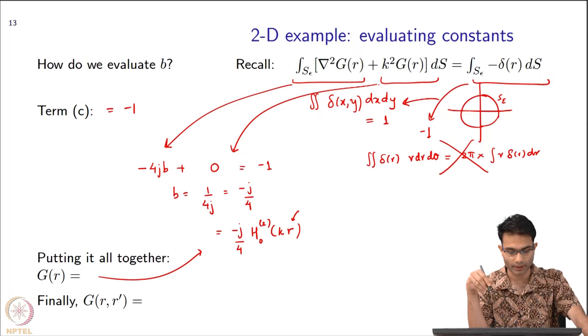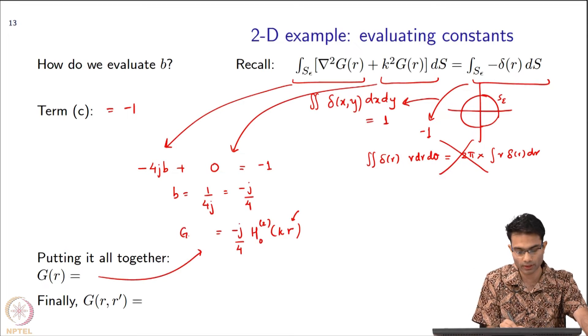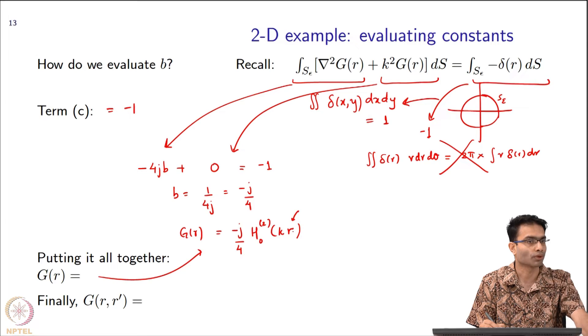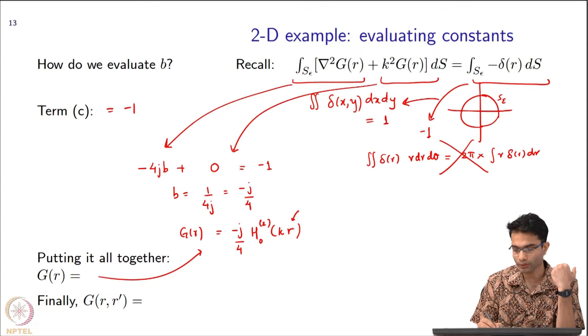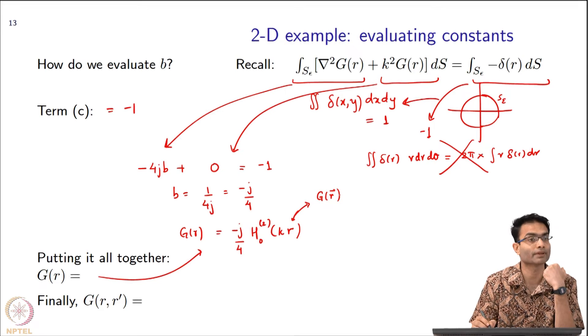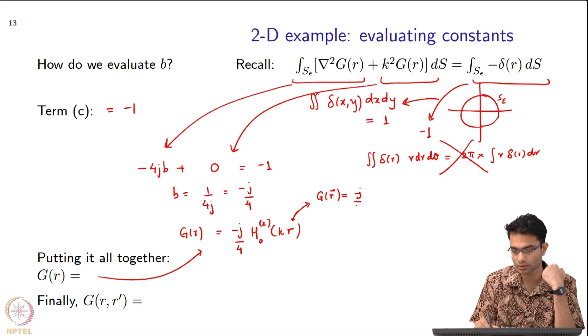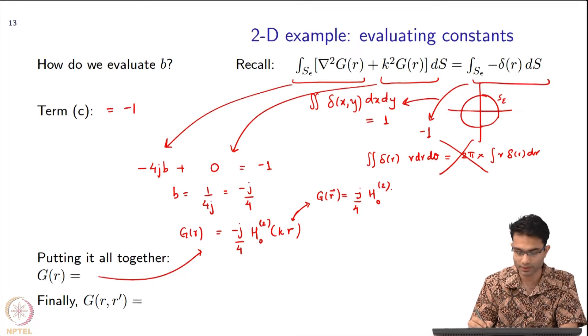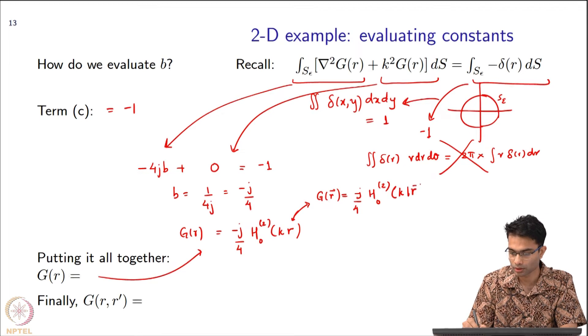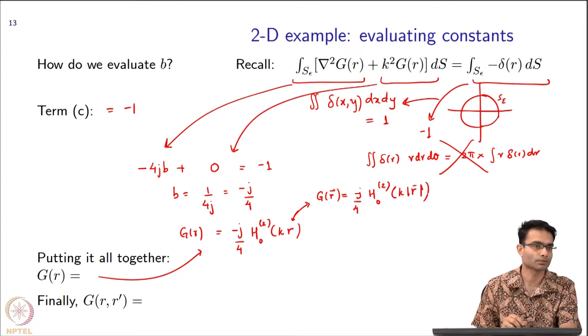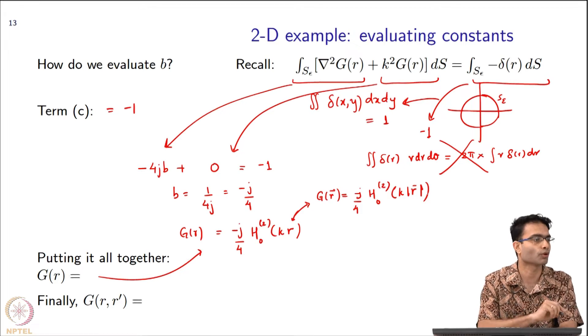Over here, what is r? It's a scalar because it matches with the x here - this is a 1-to-1 mapping, and that's the r I maintain everywhere. Finally, by the time I come to the expression for Green's function G(r), what is the meaning of this r? It's a scalar in polar coordinates. This value is always positive because it's the radial distance. If I want to write this in a more precise way where G(r⃗) can be anywhere, how should I modify this? Just the modulus of r⃗: H₀⁽²⁾(k|r⃗|).